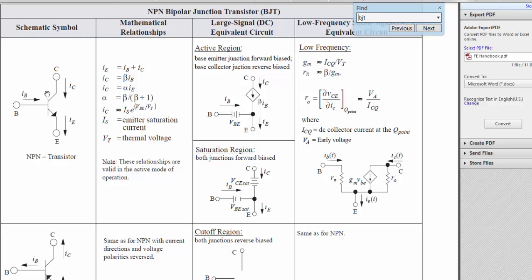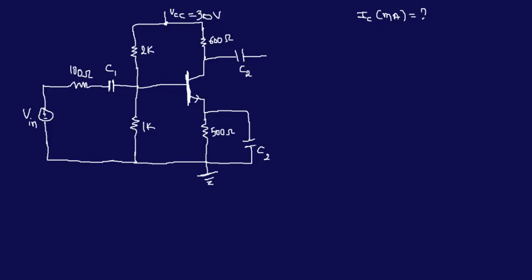Now the first thing to do is identify and label the base (B), collector (C), and emitter (E) pinpoints on the circuit. I'll mark those in red. So this is my B (base), this is my C (collector), and this is my E (emitter).